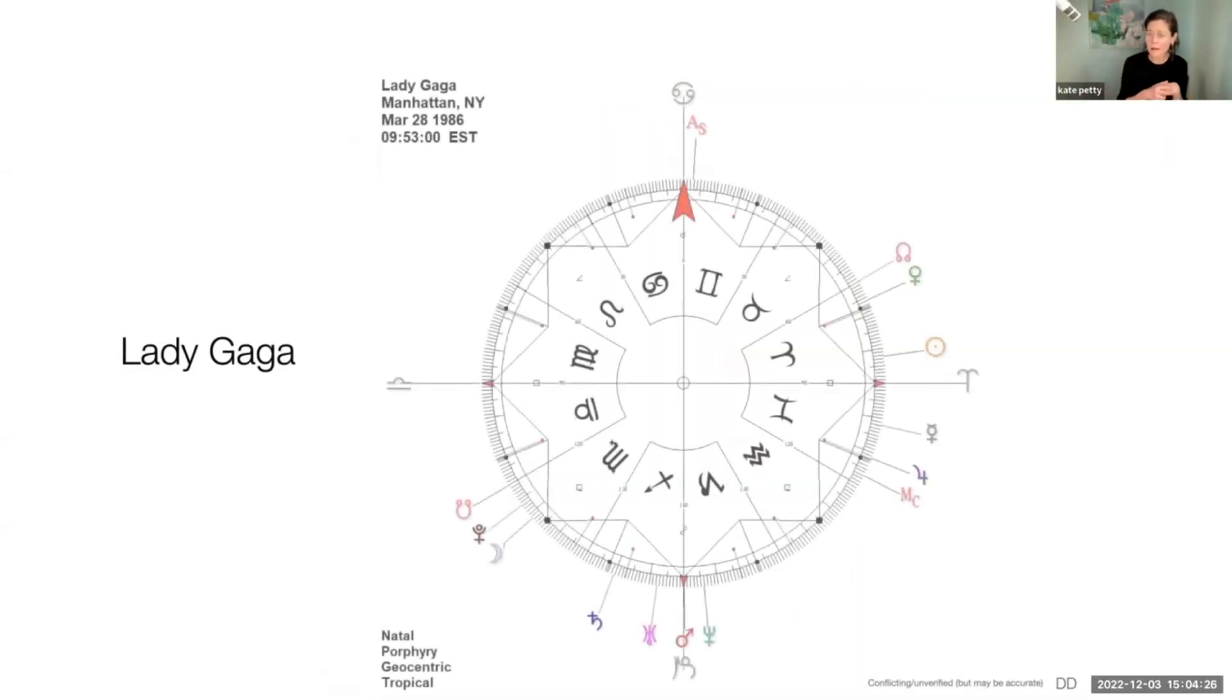Another quick example, Lady Gaga. You might have guessed that there would be a lot of Pisces Aries. This is also an example of double D data, so conflicting time, but really shows how these placements stand for the day.